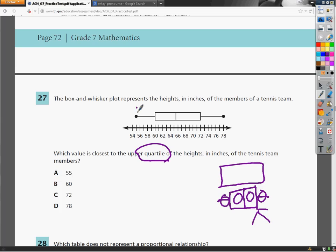So 55 is way down here. That represents nothing that we're looking for. It's not the upper quartile, that's for sure. That's out.